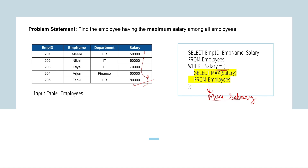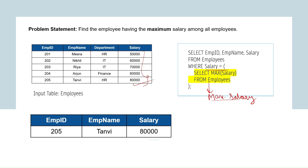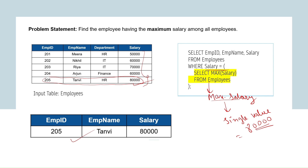The output shows the details of employee 205, named Tanvi, with a salary of 80,000. We use a scalar subquery when we want to compare each row to an aggregate benchmark. The scalar subquery fetches a single value — here, 80,000 — to use across multiple rows in the outer query.